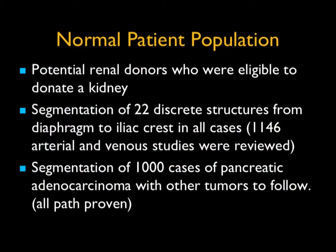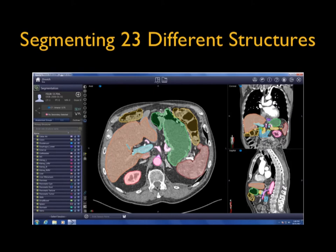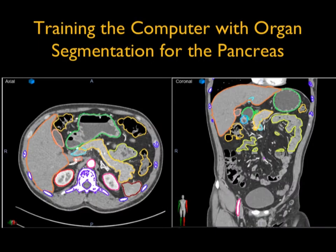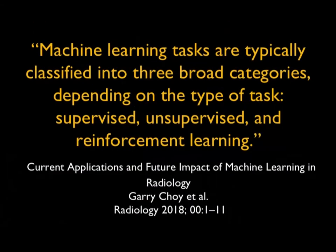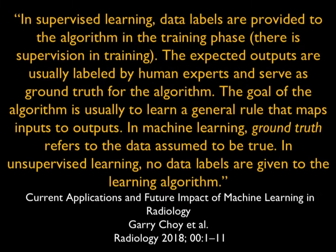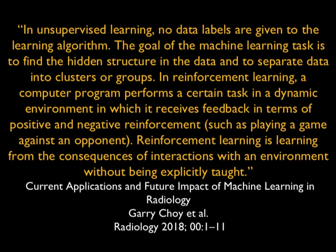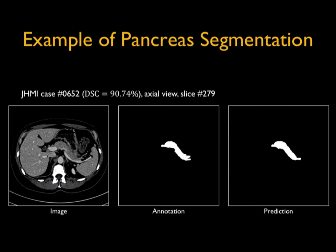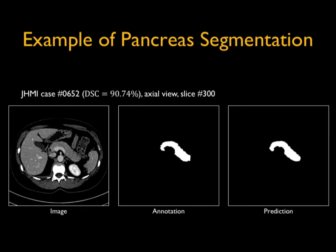We're looking at detecting pancreatic cancer at Hopkins. First, you teach the computer how to read normal scans. We've taught the computer, based on our segmentation, to perfectly read all the organs and define their borders in the body. We use supervised learning, which is painful, difficult, and time-consuming, but it's the reason we've done so well. Unsupervised learning will work in some things, but not in the difficult tasks we want to provide. The computer predicts exactly what the best radiologists predict — in the 90% range, basically 100%, with all margins well-defined.